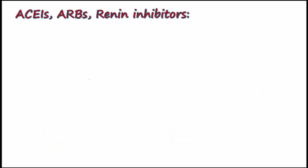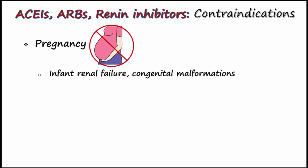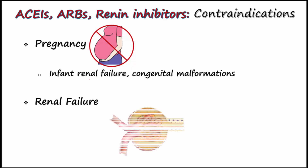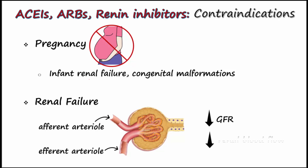ACE inhibitors, ARBs, and renin inhibitors are contraindicated in pregnancy, due to their capacity to increase the risk for renal failure and congenital malformations, like cleft palate in the developing fetus. They are also contraindicated in those with renal failure, because angiotensin 2 causes the efferent arteriole to constrict more than the afferent arteriole. Since these medications lower or block angiotensin 2 production, they decrease GFR and lower blood flow to the kidney, making renal failure worse.